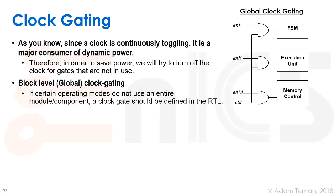If we know that a whole module is not working, we can do what is called block-level or global clock gating. We can put a clock gate that we instantiate in our RTL, and if a certain mode wants to turn off a certain block, we just gate the clock. It will never be used, the clock won't get into the block, nothing will change in state, and our clock tree also won't be wasting power. That's a very coarse level.